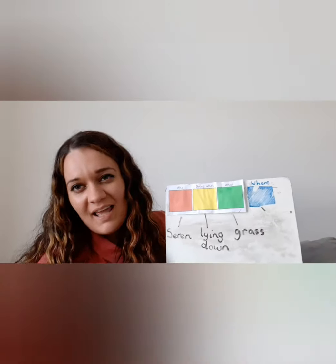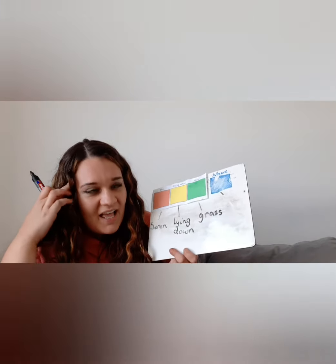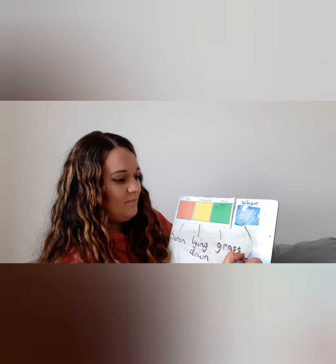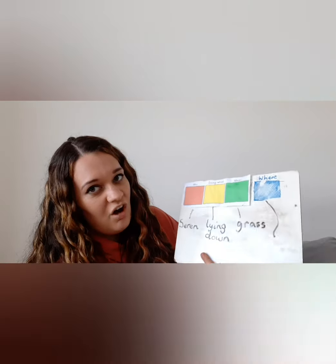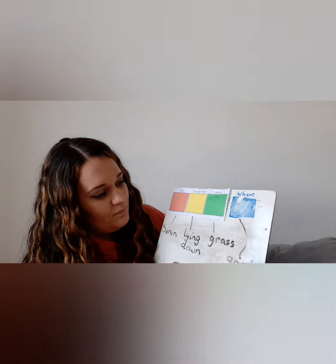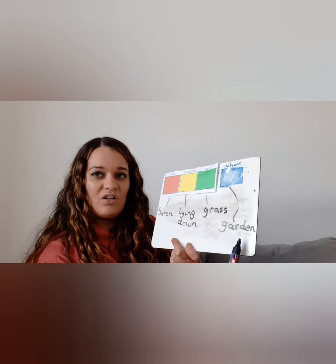It doesn't say. It's not too obvious where she is. She could be in her garden. She could be in a park. I'm going to use my imagination here and I want it to be in her garden. So I'm going to write garden. But you can write any place that you think it might be or want it to be. Garden. Seren lying down grass garden.